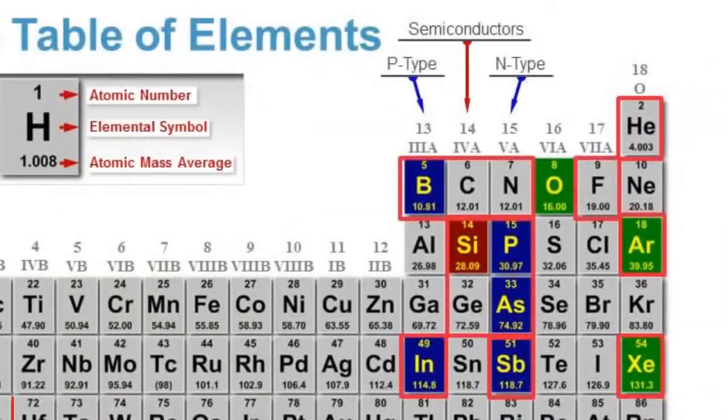Column five elements are known as donors or n-type dopants, and they have five or one extra electron in the outer shell. Examples of n-type dopants are phosphorus and arsenic.